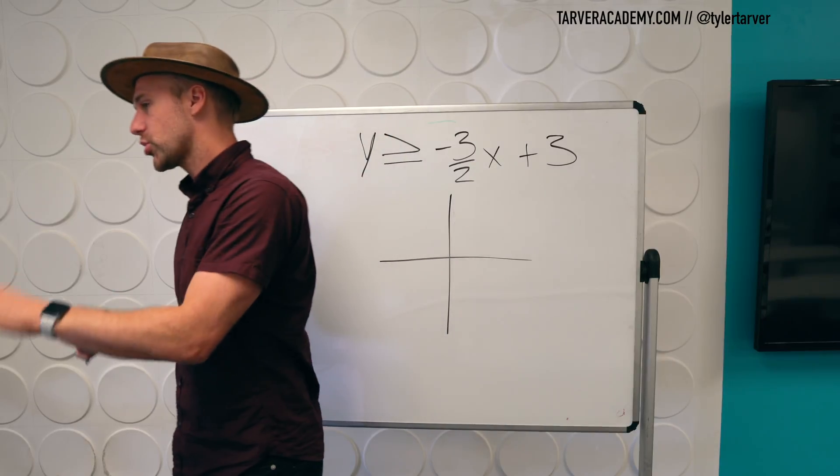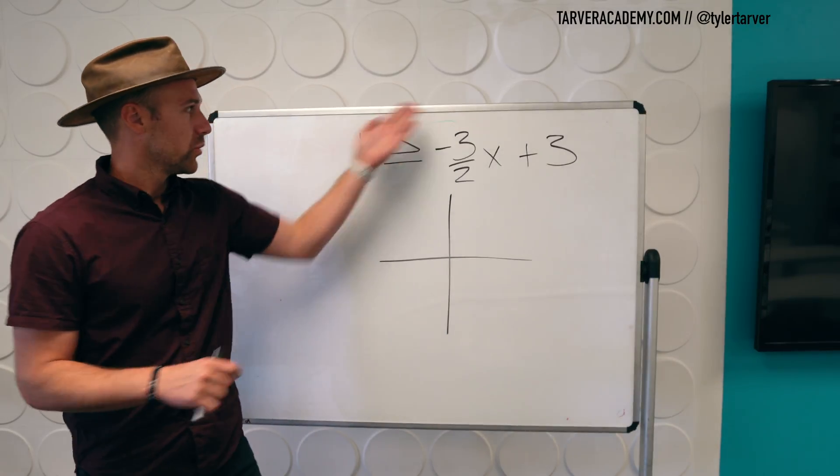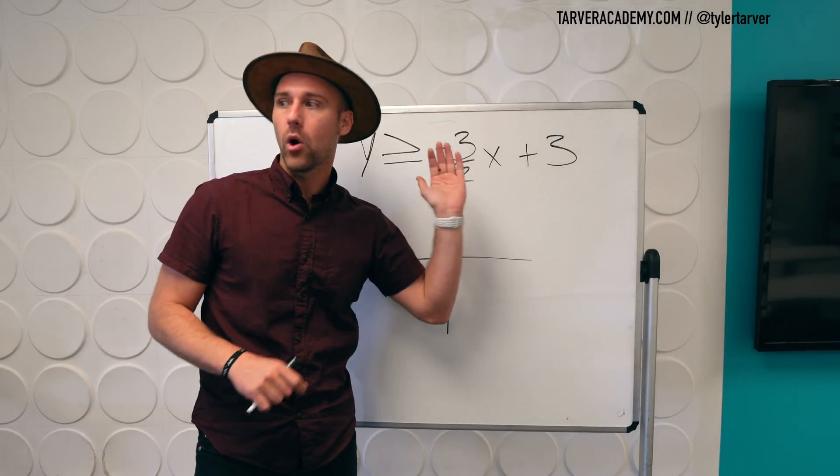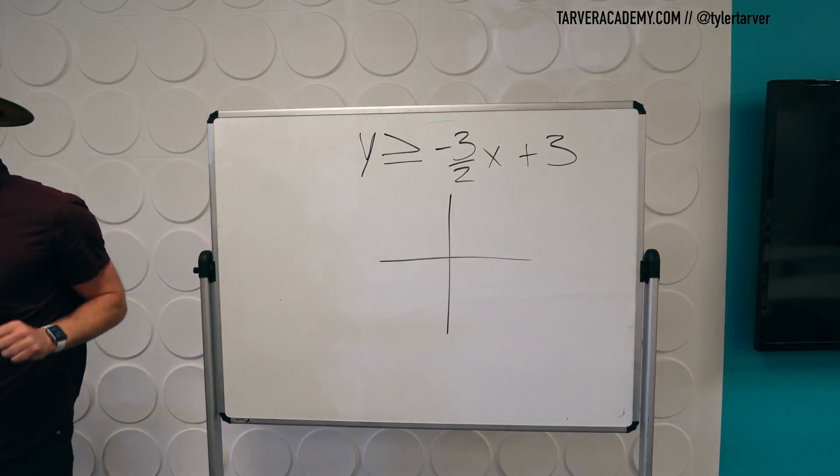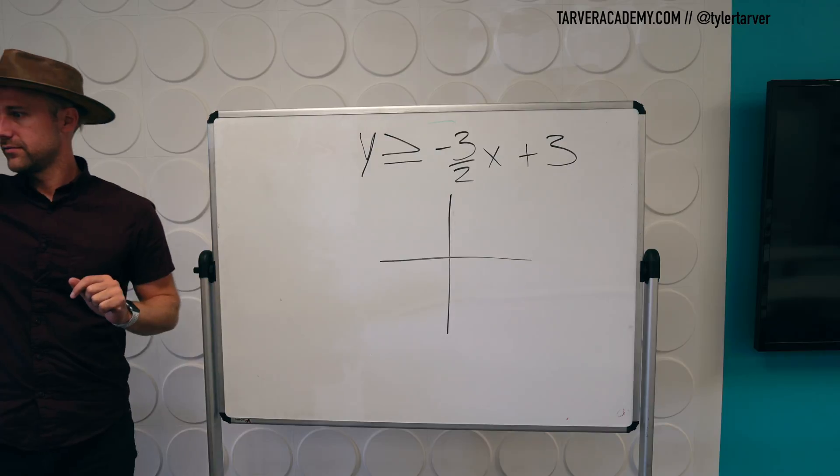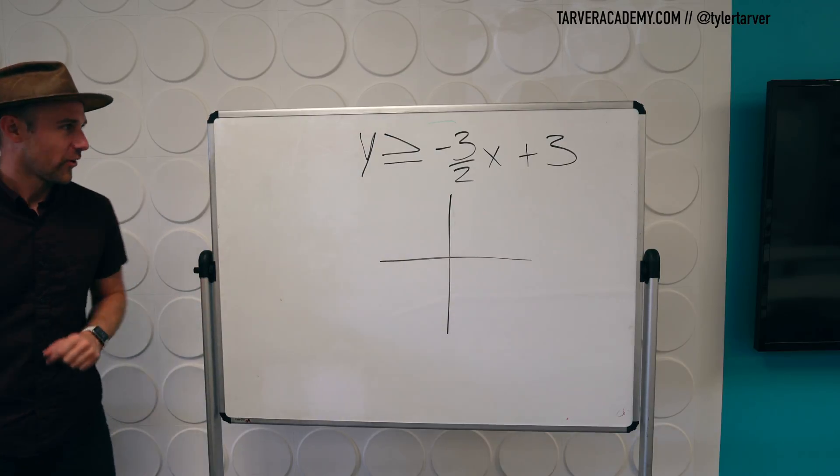So the first coordinate from this, which this is in inequality version of slope intercept form, what do I need to plot first? Y intercept. Cool. That is correct.